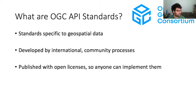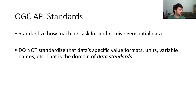The OGC API standards are developed and published by the Open Geospatial Consortium. They're standards specific to geospatial data, developed by international community processes, and published with open licenses so anyone can implement them for free. They standardize how machines ask for and receive geospatial data — they don't standardize the data values, units, and variable names themselves. That's the domain of data standards, which we at the Internet of Water also care a lot about.